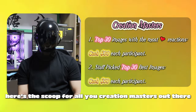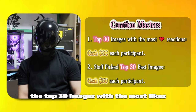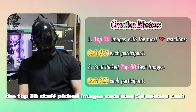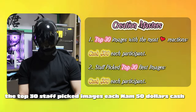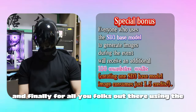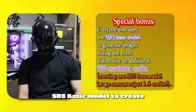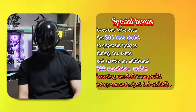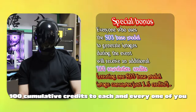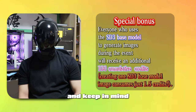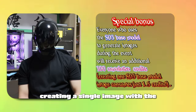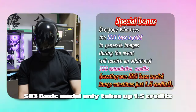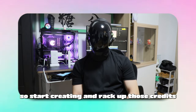Here's the scoop for all you creation masters. The top 30 images with the most likes each pocket a cool $30 cash. The top 30 staff-picked images each earn $50 cash. And for all you folks using the SD3 Basic Model to create images during the event, we've got a special surprise: we're handing out 100 cumulative credits to each and every one of you. Keep in mind, creating a single image with the SD3 Basic Model only takes 1.5 credits, so start creating and rack up those credits.